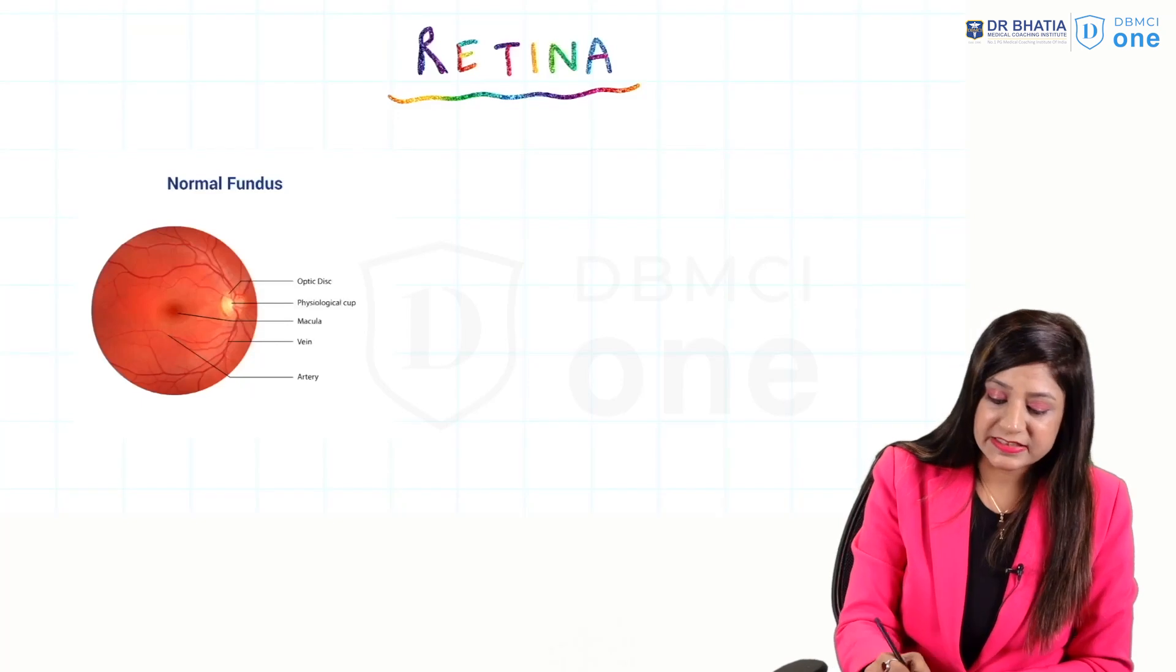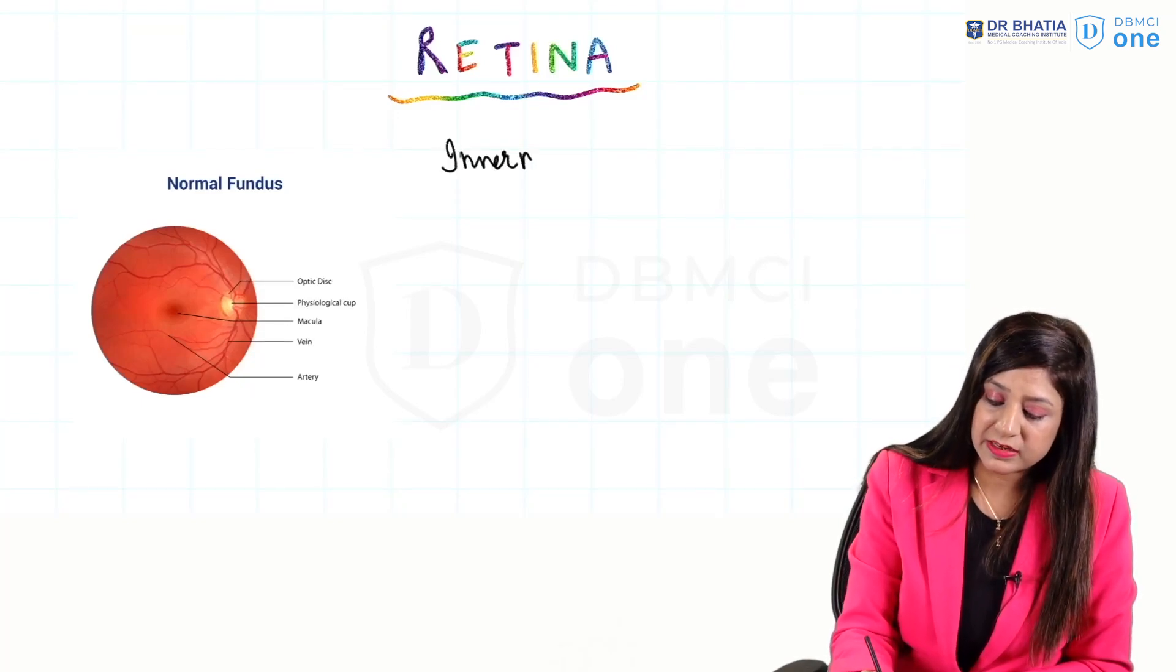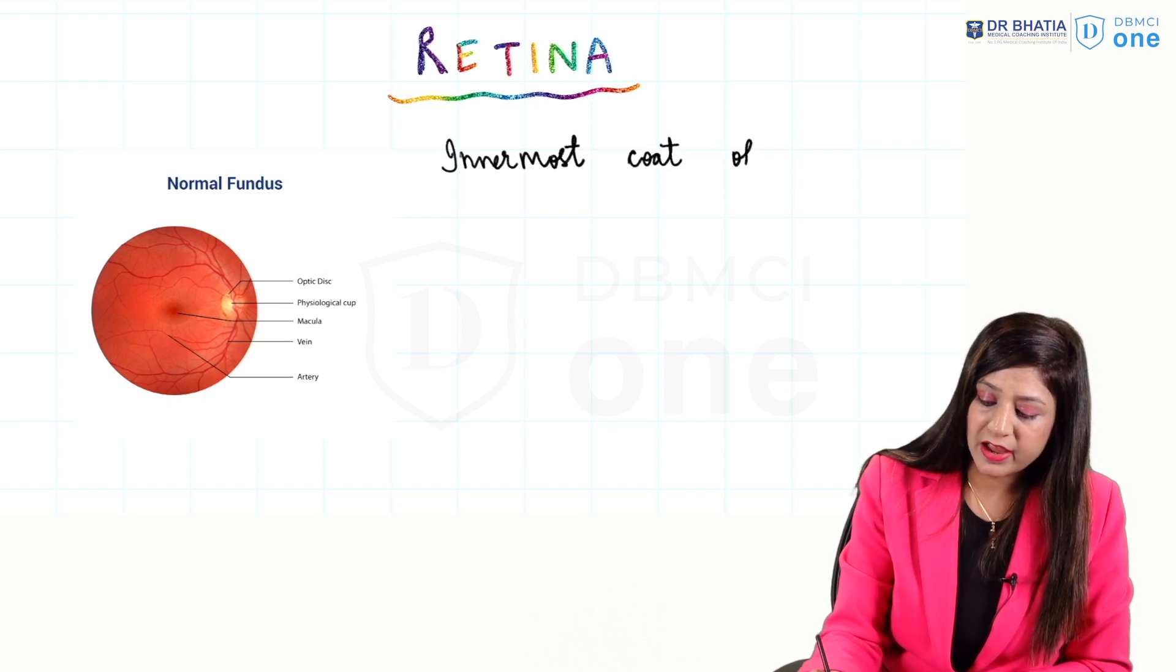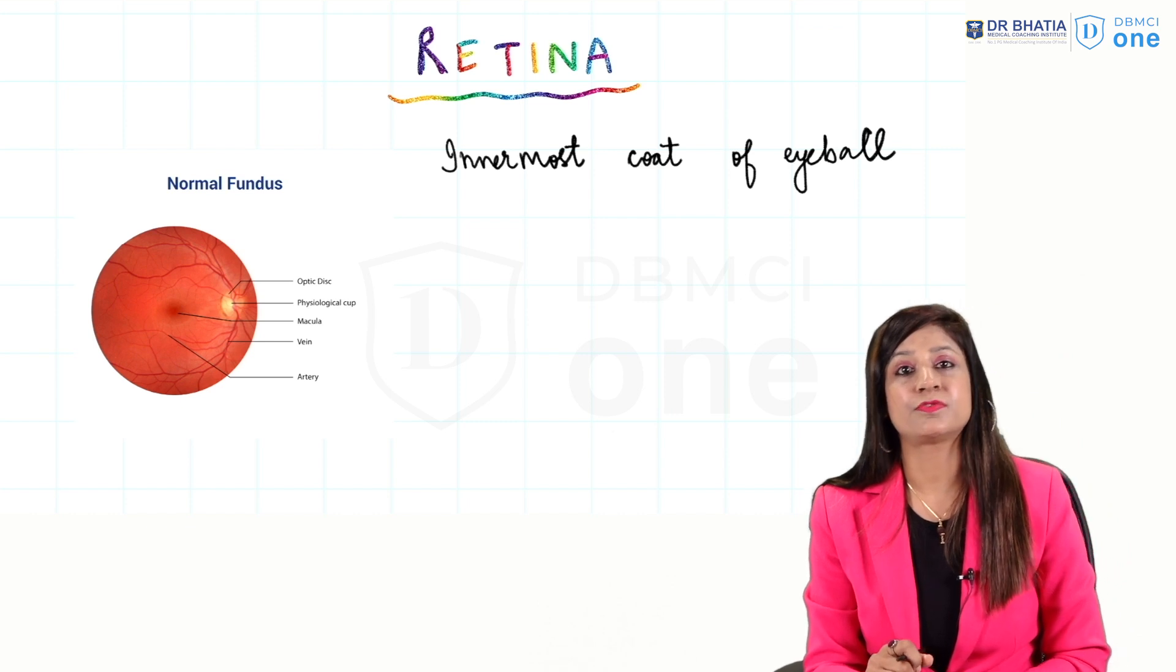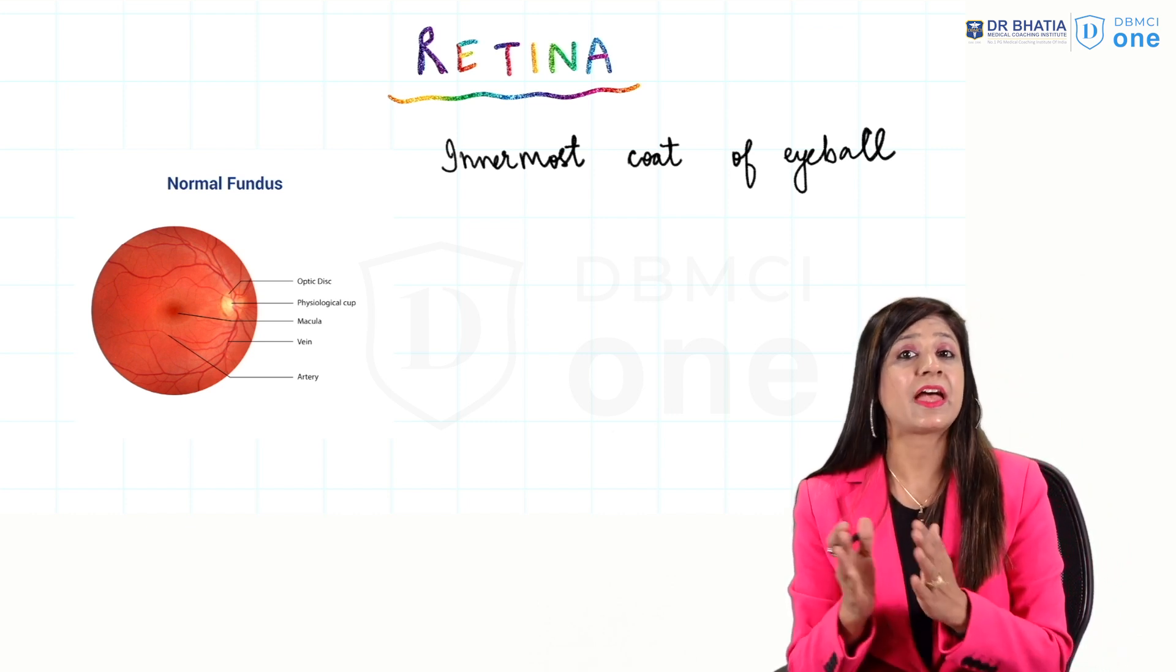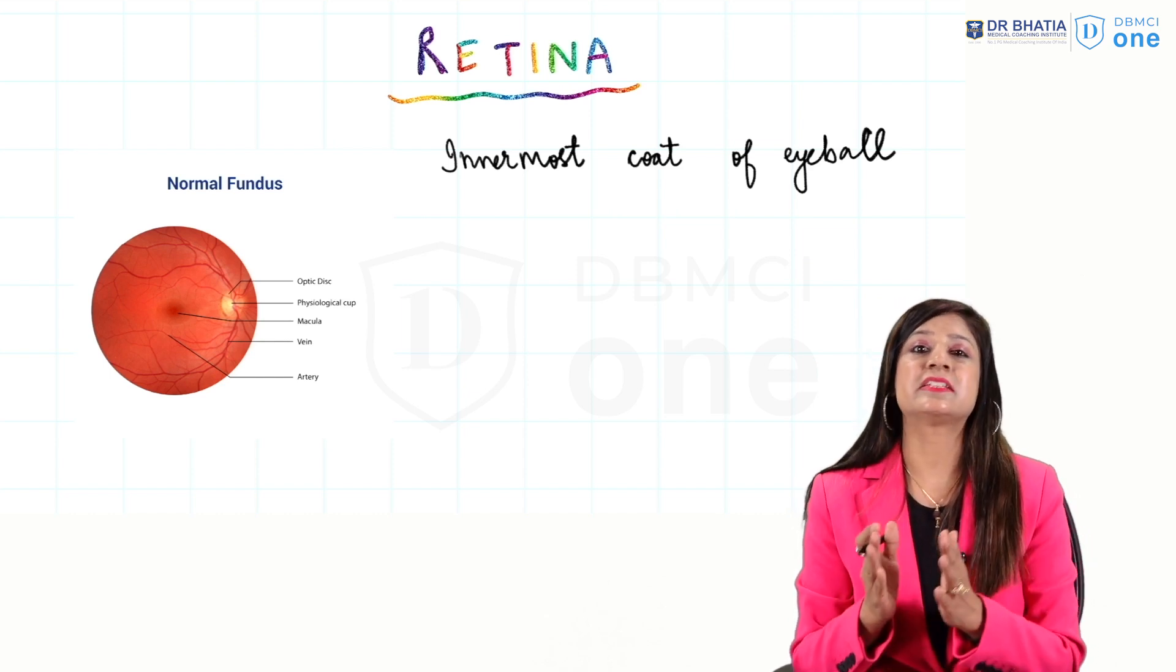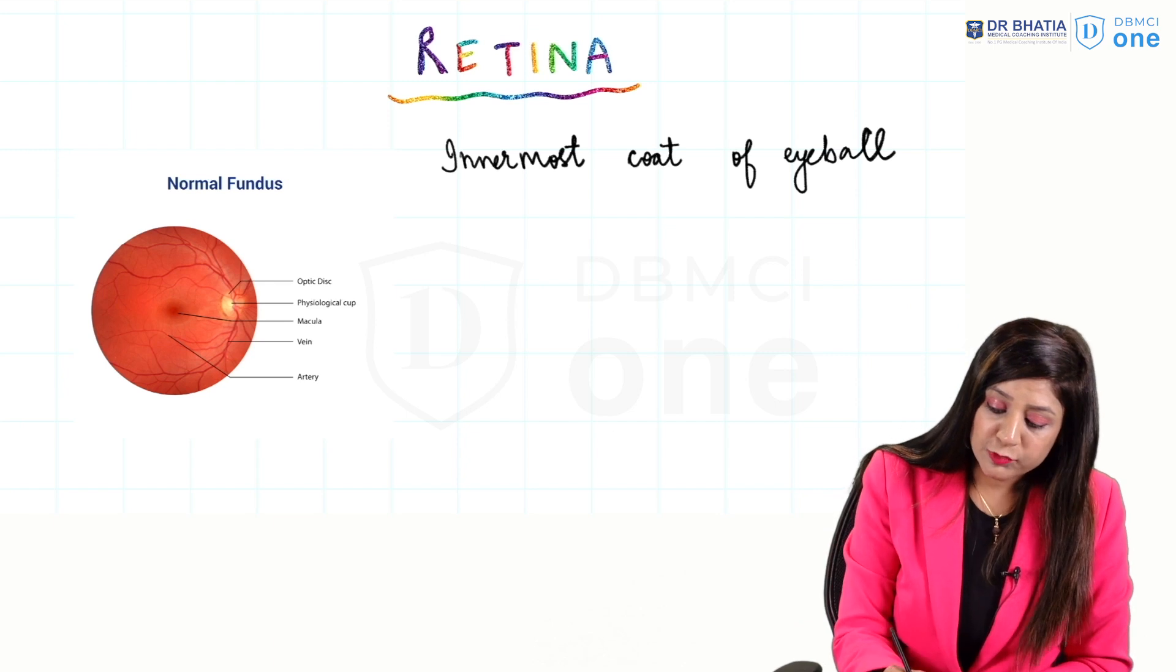What is retina? It is the innermost coat of the eyeball. If you remember, there were three coats of the eyeball: the fibrous coat, the vascular coat, and the nervous coat. The nervous coat was the innermost and contains the retina and optic nerve.